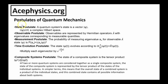I'll read the postulates now. The state postulate: a quantum system's state is a vector psi, which is an element of a complex Hilbert space. The observable postulate: observables are represented by Hermitian operators — for example, A-hat — where the eigenvectors correspond to measurable quantities.